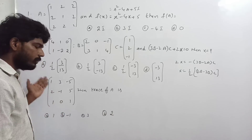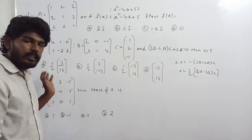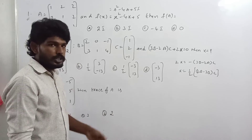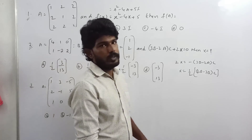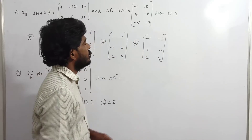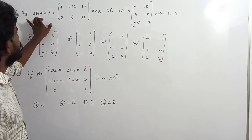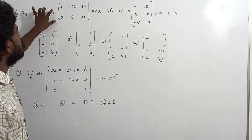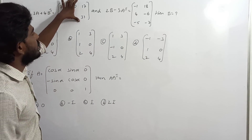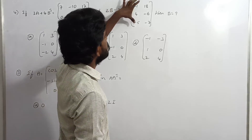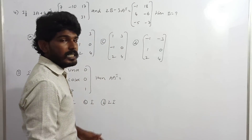So X equals one half times 2A minus 3B into C. Two questions are discussed. Next: given A and 3A minus 4B transpose equals 2B minus 3A transpose, find B.